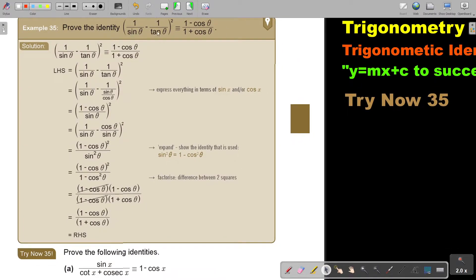Proof the identity. Start with the left-hand side. It's the more complicated. In this case, we're not going to multiply it out because it's with fractions. As soon as we see fractions, we always try to rather express it in terms of sin and cos.